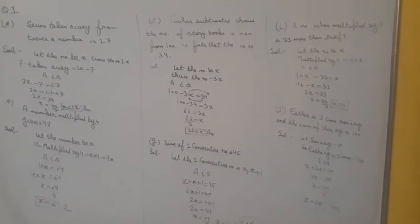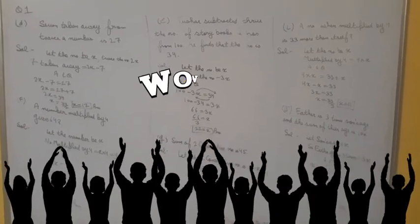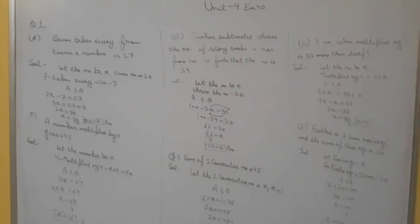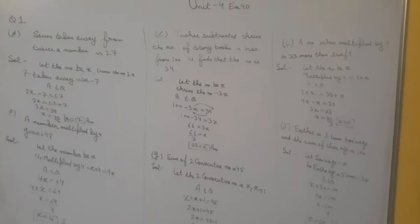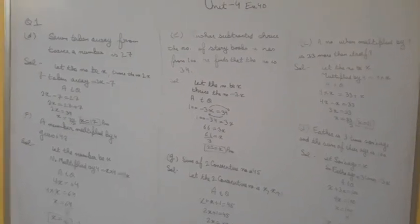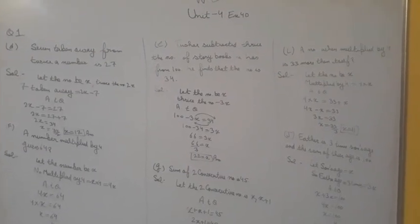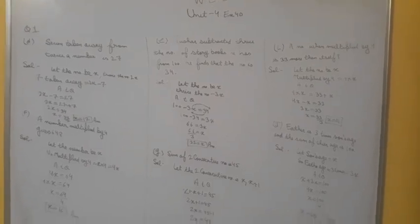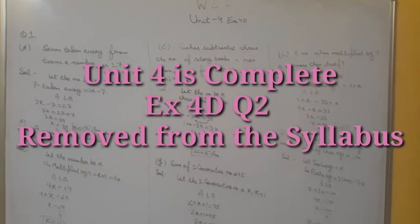The second question will not be covered — it won't come in the paper. Due to COVID, we need to reduce your syllabus, so some sums from the exercise will be cut. Stay updated with us — as we inform you, keep cutting those questions. Unit 4 is now complete. Next we will do Unit 6.